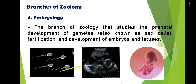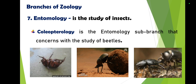Next is embryology, which is the branch of zoology that studies the prenatal development of gametes — also known as sex cells. There are two types: sperm cells and egg cells. When both parent cells combine, fertilization occurs, and from fertilization an offspring is developed. That process is the focus of embryology.